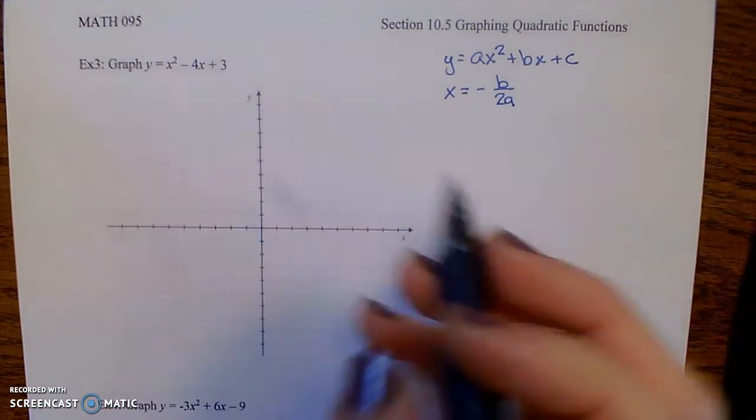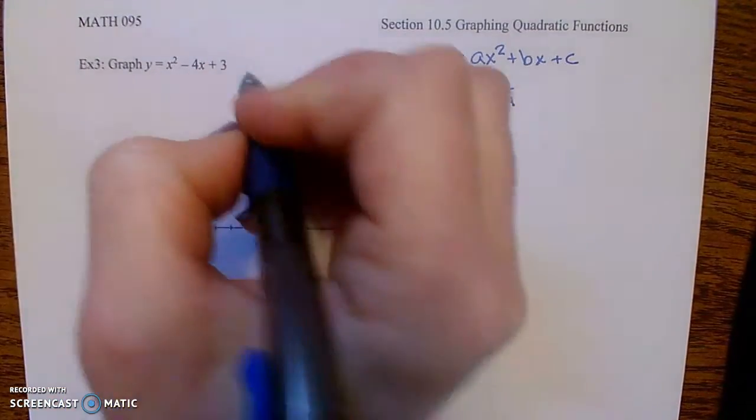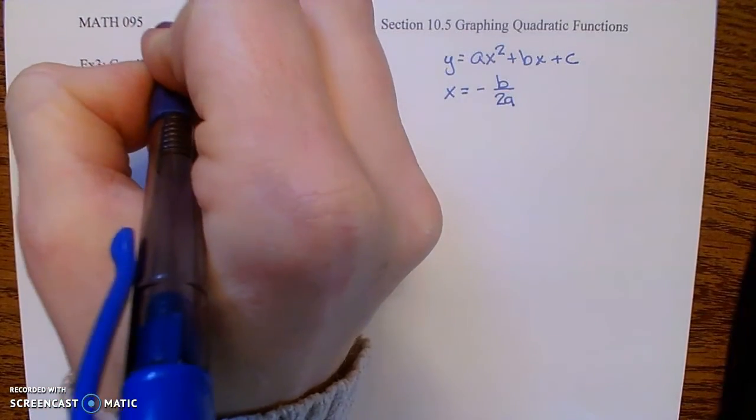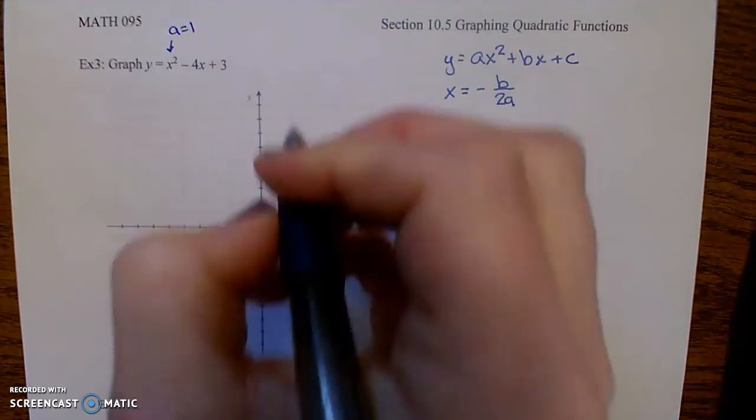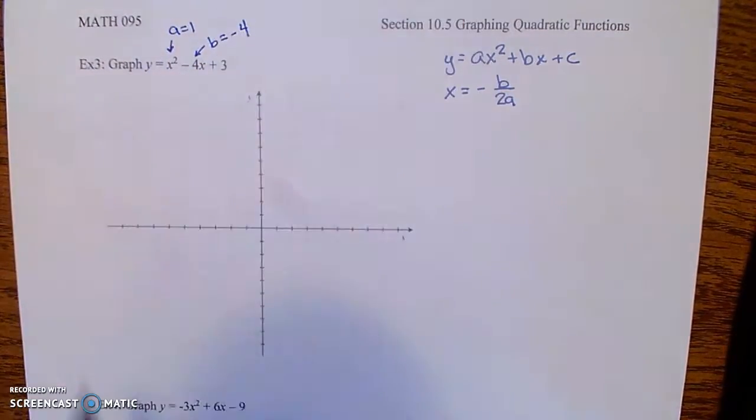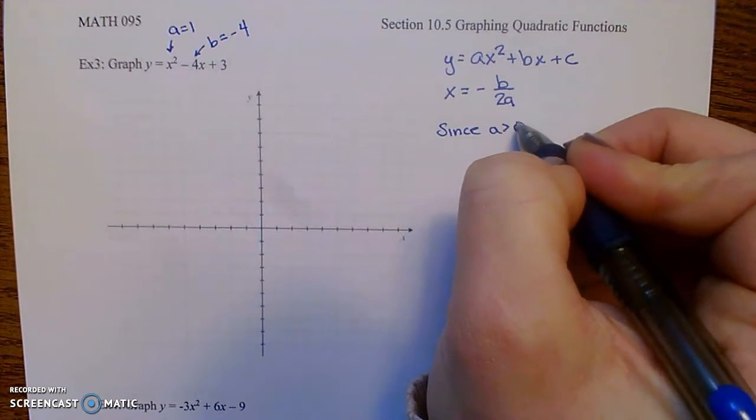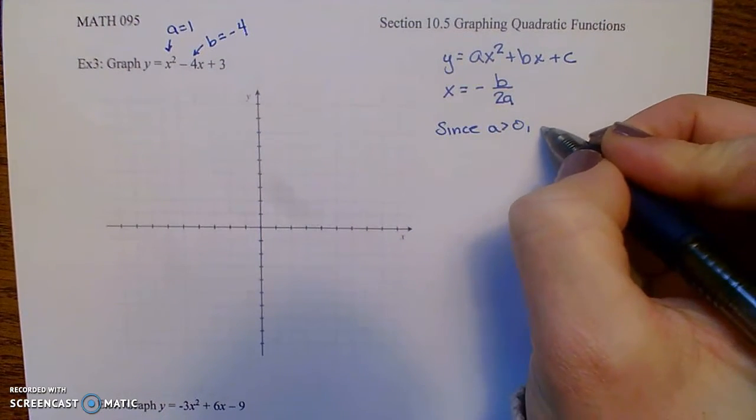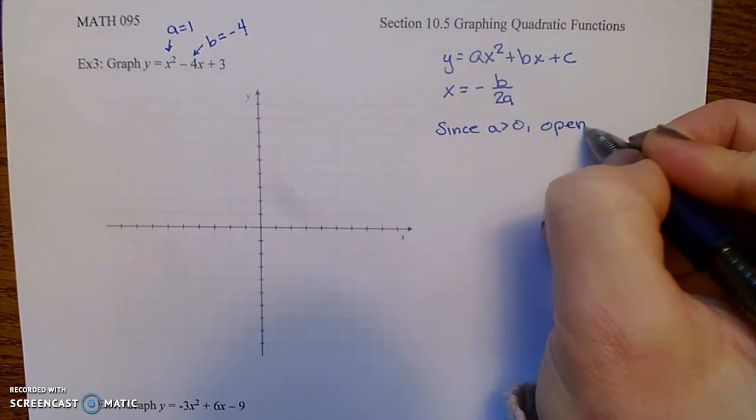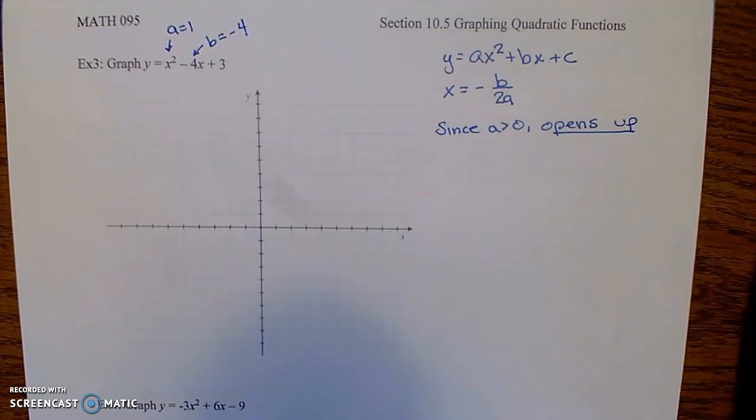I like to look at the equation. Number one, determine the coefficient a. In this case, a is 1, and also b is negative 4. So since a is positive, the parabola opens up.